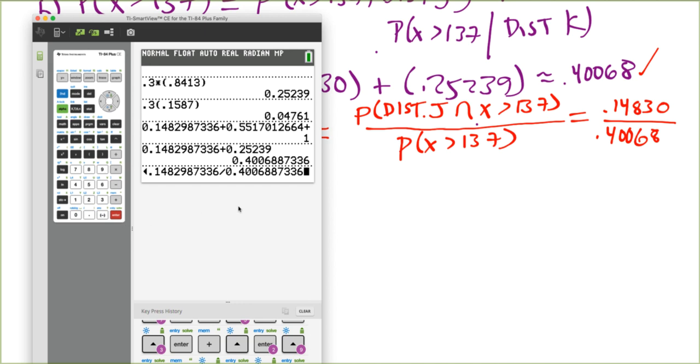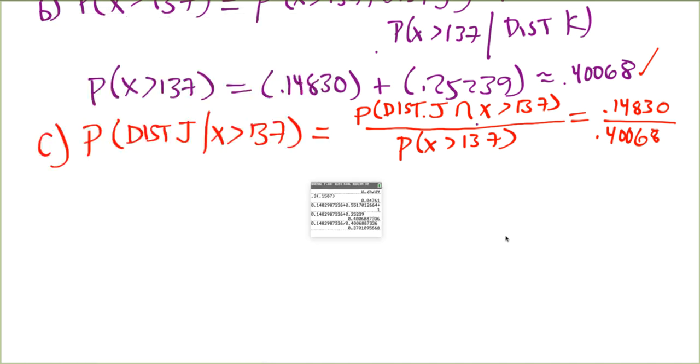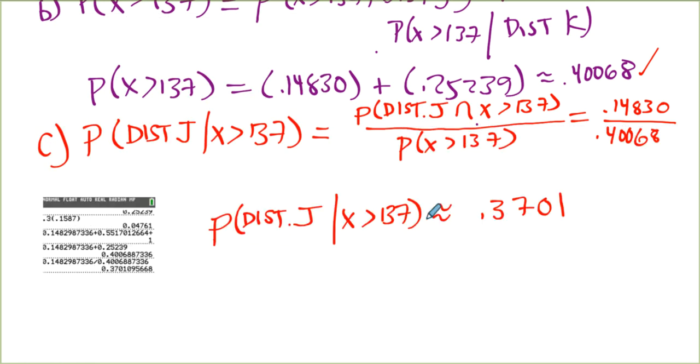So I love the calculator because you can put in everything. I just scroll up and get the numbers. I'm going to get 37, it's about 37. Let's throw that down here. So writing it all out, the probability it's from distributor J given that it's greater than 137 is equal to 0.37-ish.